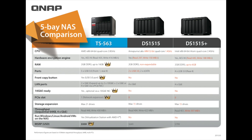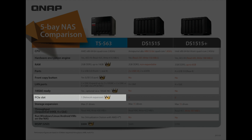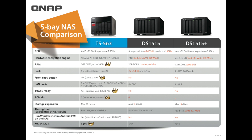Next, let's look at the ability to connect a 10 GbE card into these systems. With the QNAP TS-563, you can connect a 10 gigabit card into the system for 10 GbE networking. The DS-1515 doesn't have this, nor does the DS-1515+. For PCIe slots, the QNAP has one slot for network expansion, allowing you to expand the unit. The DS-1515 and DS-1515+ do not include PCIe slots.